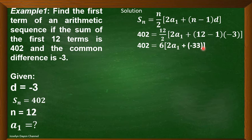12 minus 1 is 11 times negative 3 is negative 33. Now, we'll simplify further. Actually, there are two ways to simplify this. We can apply the distributive property of multiplication over addition, or we'll have to divide both sides of the equation by 6.